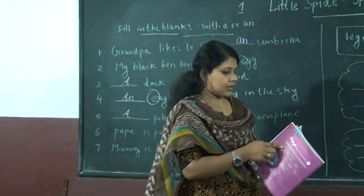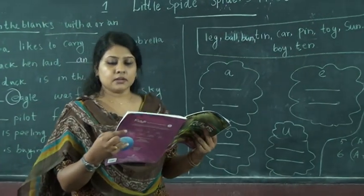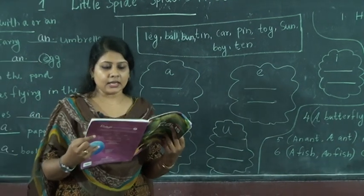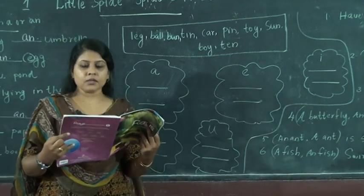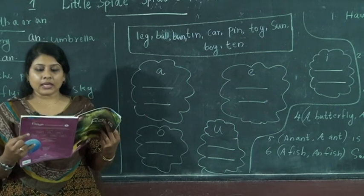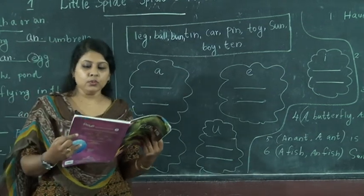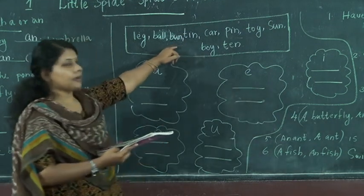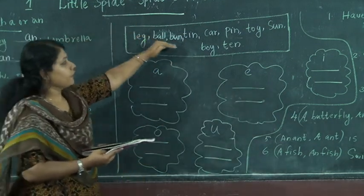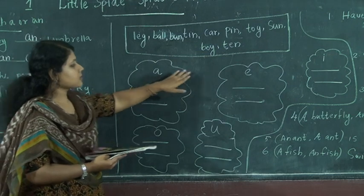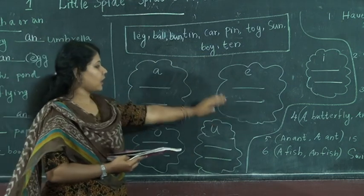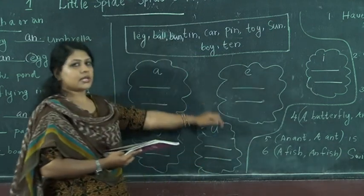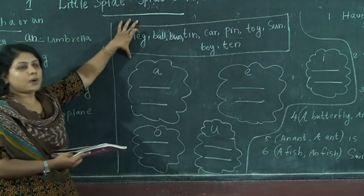Then, next exercise. Take page number 39, Exercise D. The words in the box have A, E, I, O, or U. Write them in the correct clouds. There are 10 words and 5 clouds — one for each vowel: A, E, I, O, U.